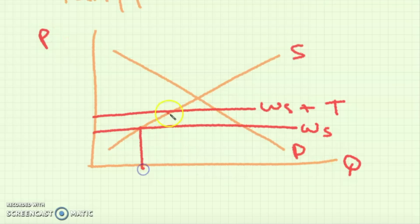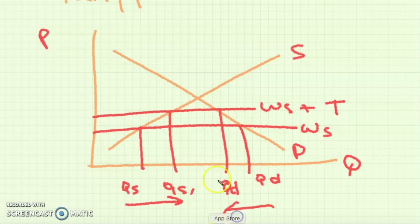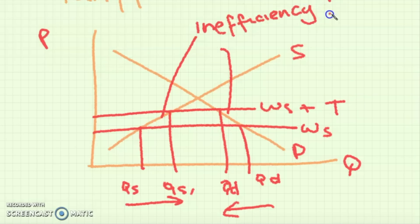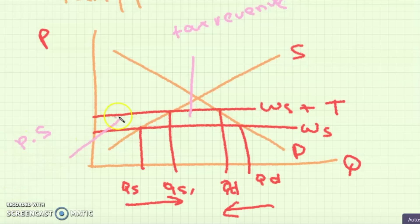If I am talking about tariffs then all I have to do is shift the world supply curve up by the extent of the tariff. Now we see that domestic supply increases from QS to QS1 while demand decreases because now the price has gone up from WS to WS plus T. We also see that there is inefficiency loss which are the triangles. There's tax revenue gained however and there's an increase in producer surplus, however all of that area is lost in consumer surplus.